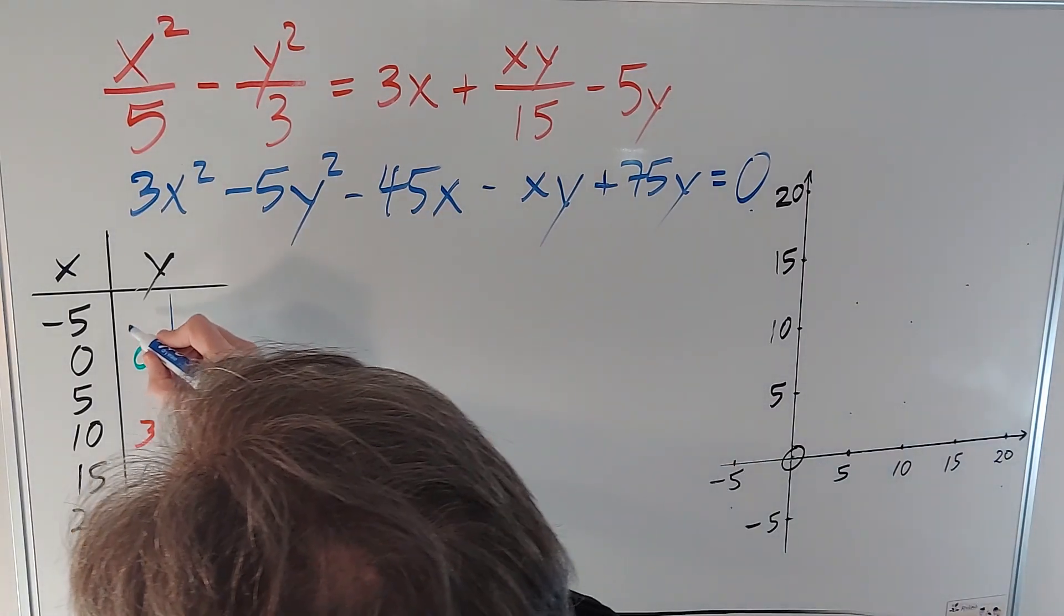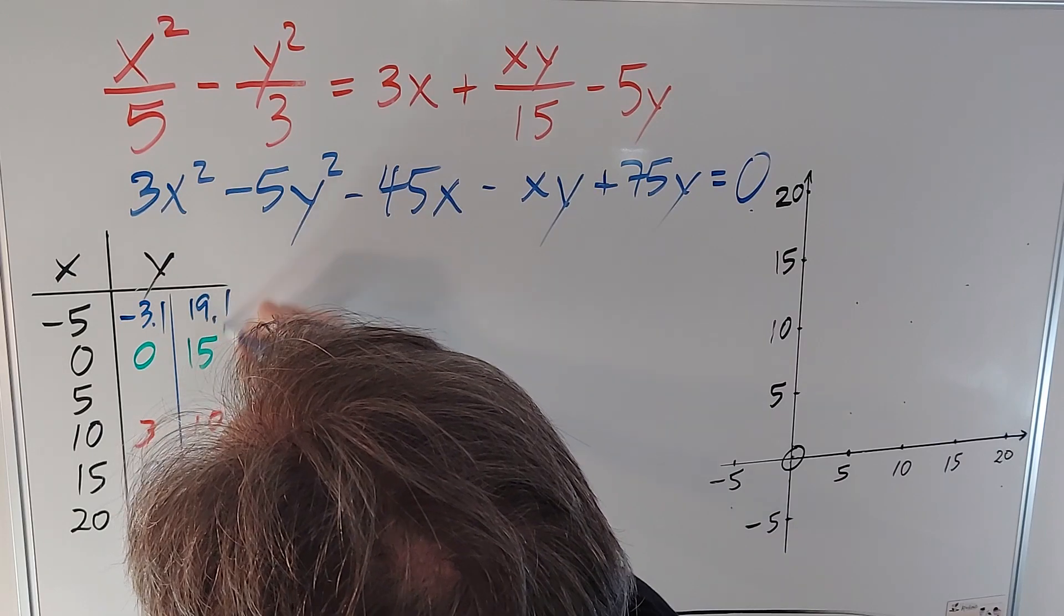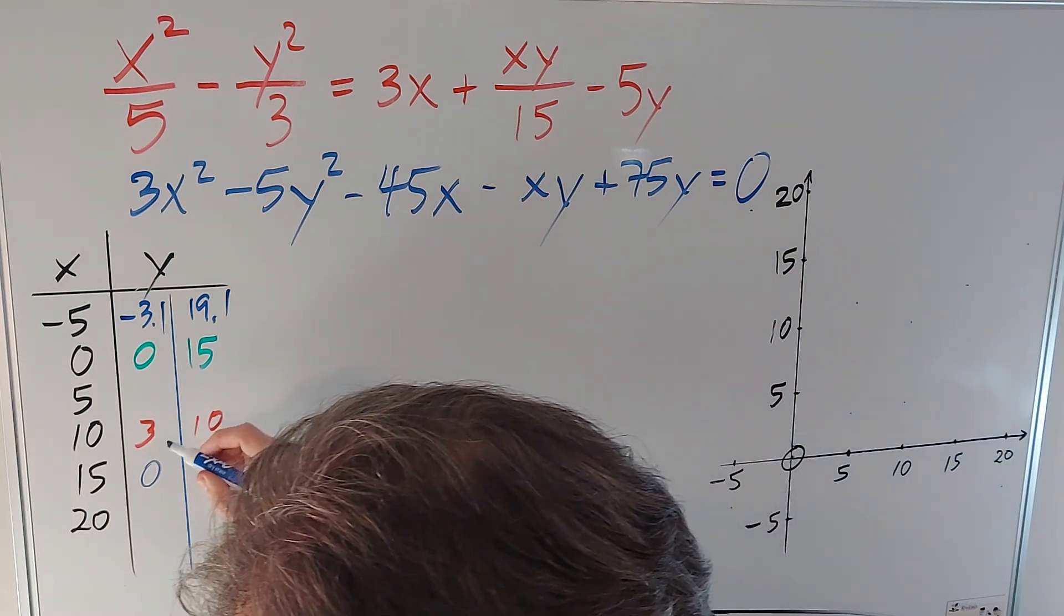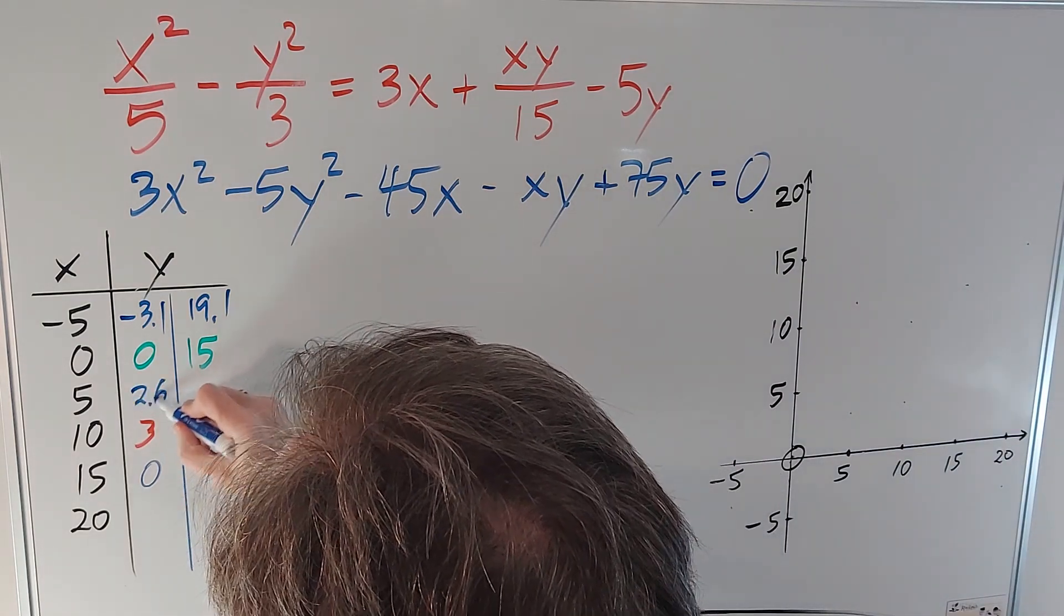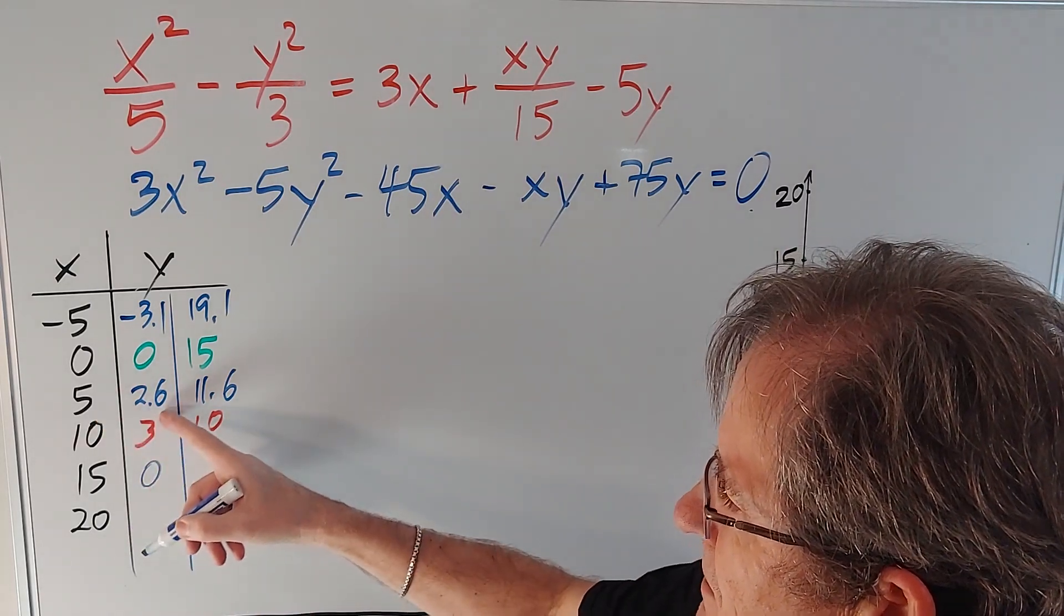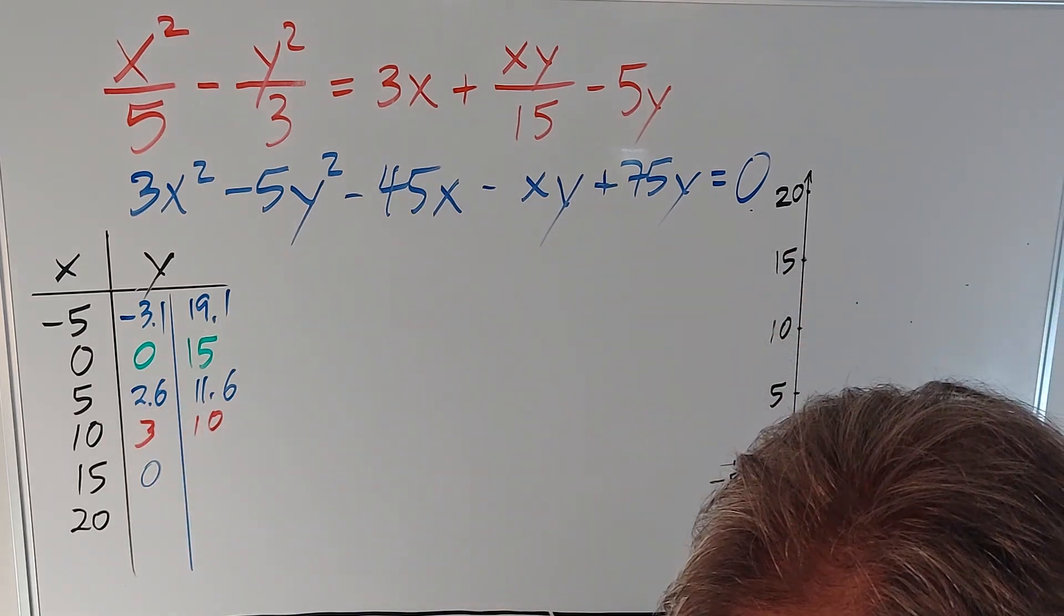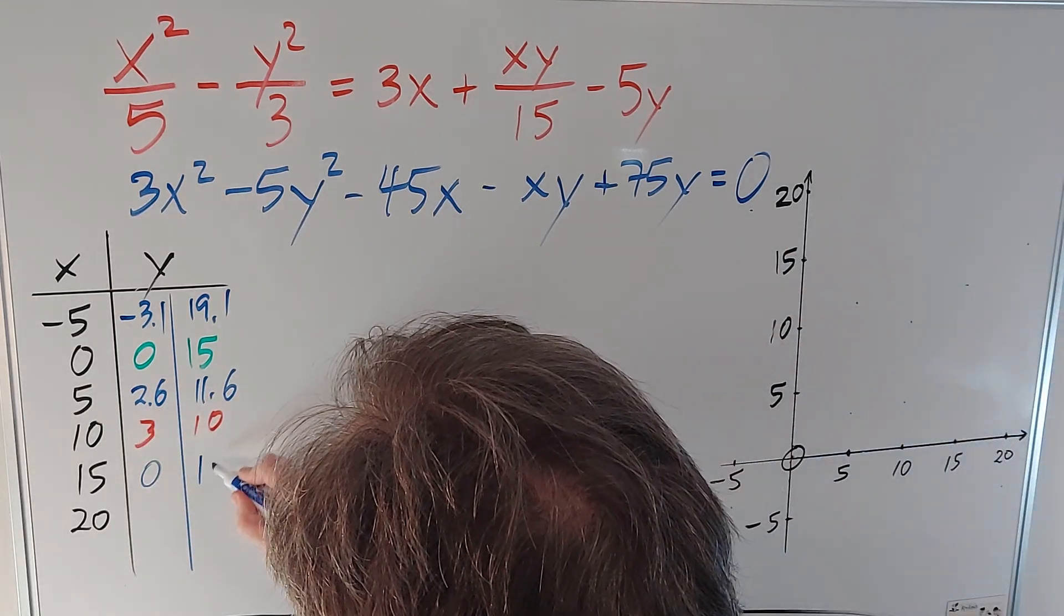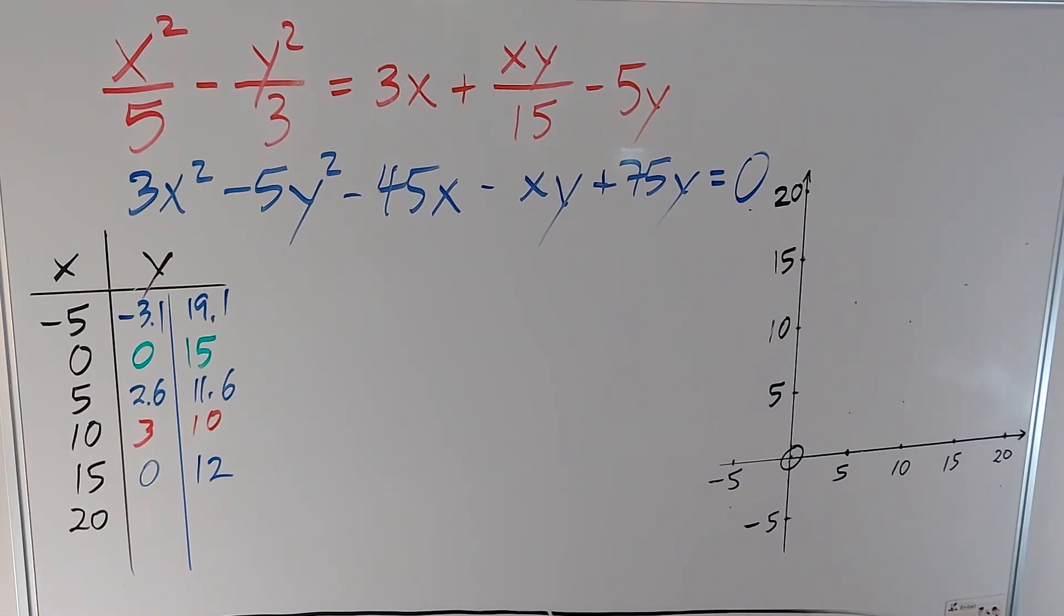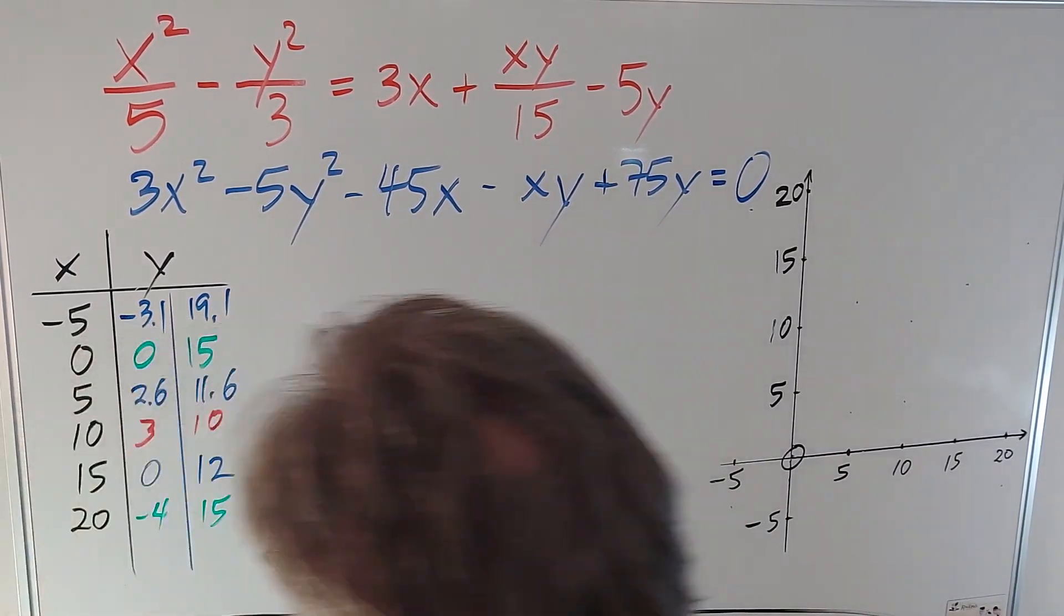Now this turns out to be -3.1 and 19.1. So when you use -5, you have to use the quadratic formula. 5 gives 2.6 and 11.6. So that shows again that (5,3) is not on the hyperbola. It's actually 5 and about 2.6. 15 gives 0 and 12. And 20 gives -4 and 15.